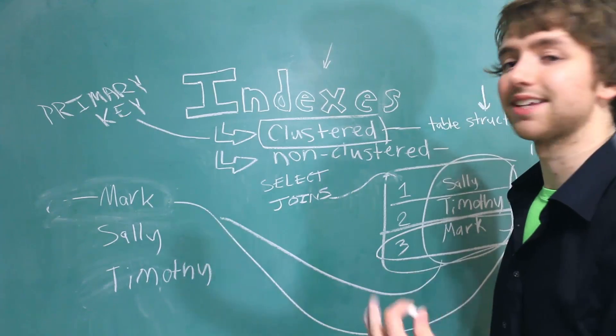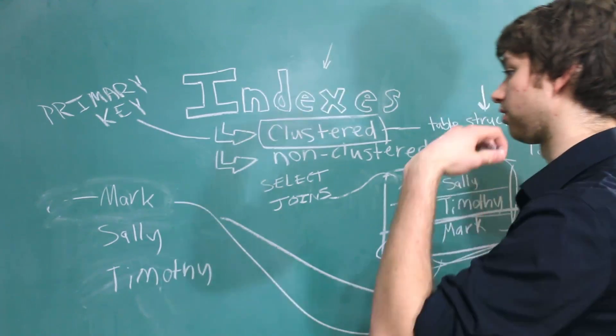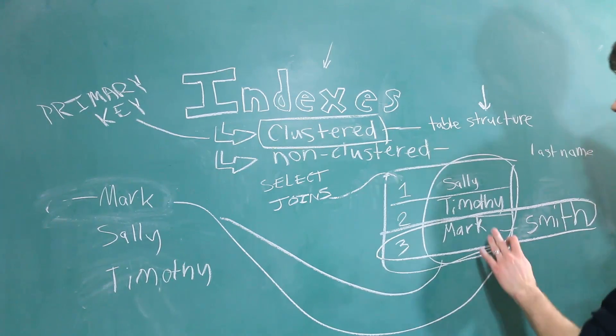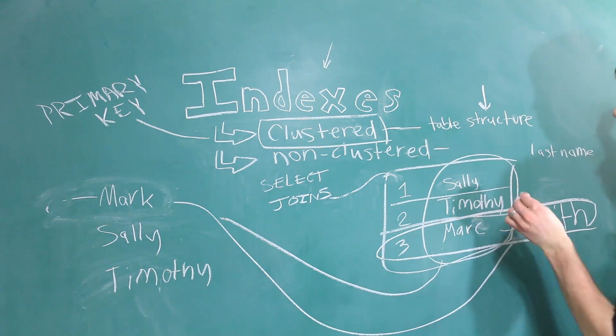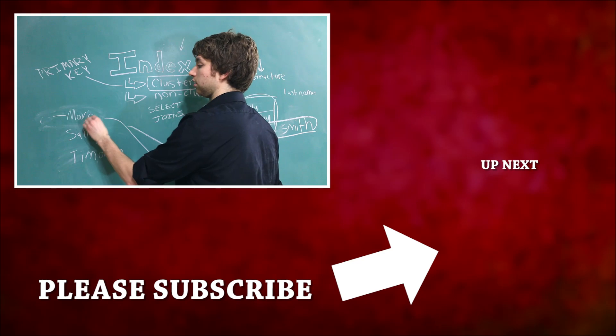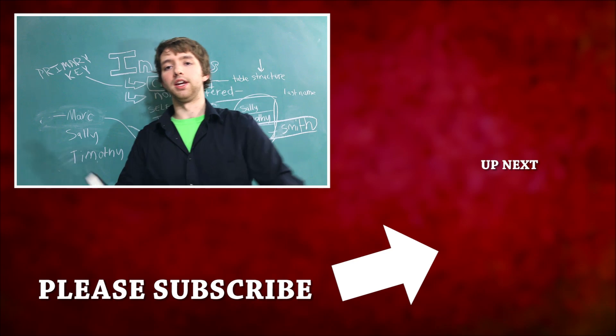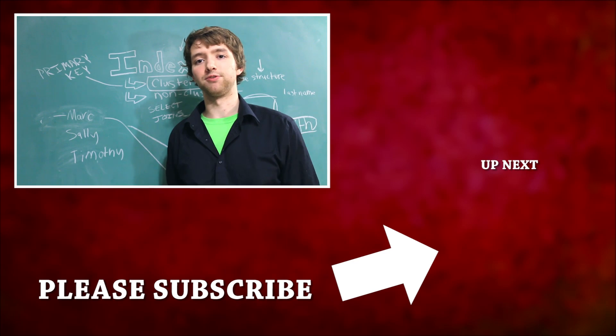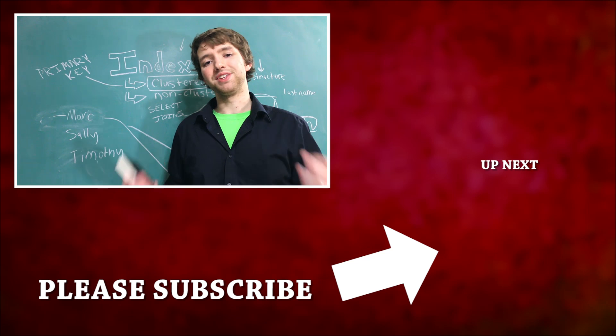The only concern you might want to have is that the more indexes you have, the slower the database becomes. That's because anytime you update data or insert data, it's got to update it in all of the indexes. So for example, let's say Mark changes his name to Mark with a C. Well, now this has to be updated in all of the indexes referencing that column. So there's a good balance. And obviously this is a lot of information for one video so we can't cover it all. But this is a pretty good overview.